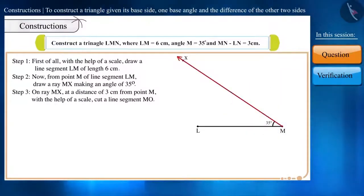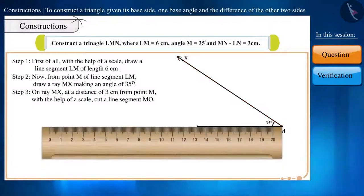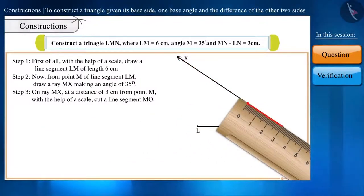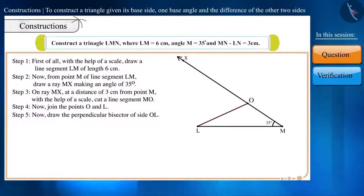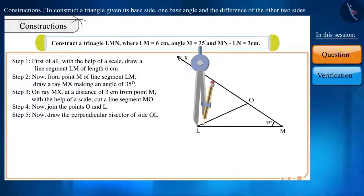Step 3. On ray MX at a distance of 3 cm from point M, with the help of a scale, cut a line segment MO. Step 4. Now let's join the points O and L. Step 5. We will draw the perpendicular bisector of side OL.